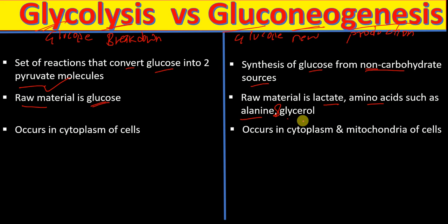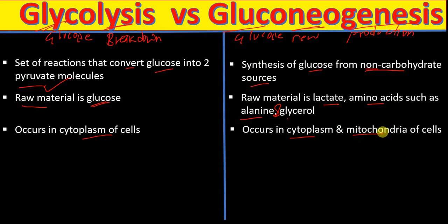Glycolysis occurs in the cytoplasm of the cells, whereas gluconeogenesis occurs in the cytoplasm as well as the mitochondria of the cells.